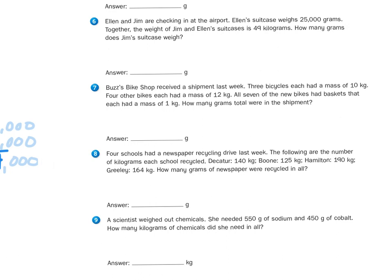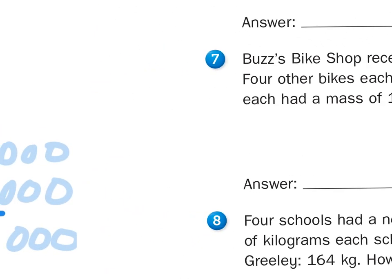It says, Buzz's bike shop received a shipment last week. Three bicycles each had a mass of 10 kilograms. Four other bikes each had a mass of 12 kilograms. All seven of the new bikes had baskets that each had a mass of 1 kilogram. How many grams total were in the shipment? We're going to use the strategy of RUCKUS to help us solve this problem.